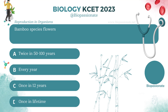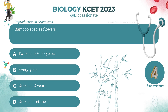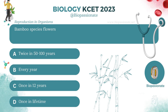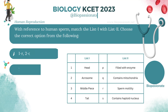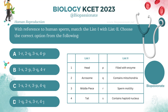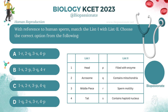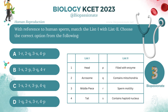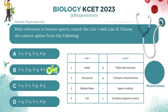Bamboo species flowers how often? Answer: Once in a lifetime. With reference to human sperm, match list 1 with list 2 and choose the correct option. Answer: Option B.